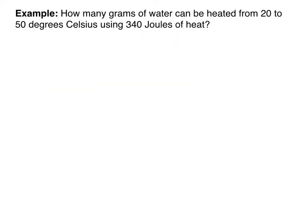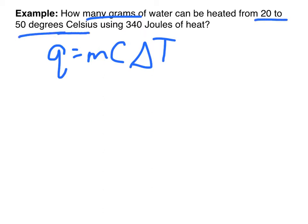Let's try another one. How many grams of water can be heated from 20 to 50 degrees Celsius using 340 joules of heat? All right, so let's use Q equals MCAT again. Let's underline our important information. How many grams of water are heated from 20 to 50 degrees Celsius using 340 joules of heat? All right, so how many grams of water? That's M. 20 to 50 degrees? That's my change in temperature. And using 340 joules of heat? That would be Q. So all I'm missing is C, but remember, I have to remember my constant for C.